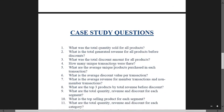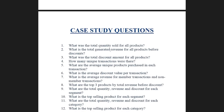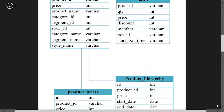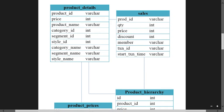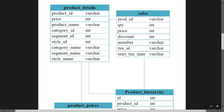Moving to question two: what is the total generated revenue for all products before discounts? In the sales table we have the price and discount columns. Price is the original price and discount is the discounted price. For revenue before discount, we multiply quantity by price. We will not consider the discount column.